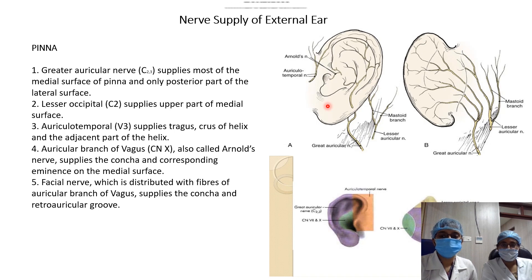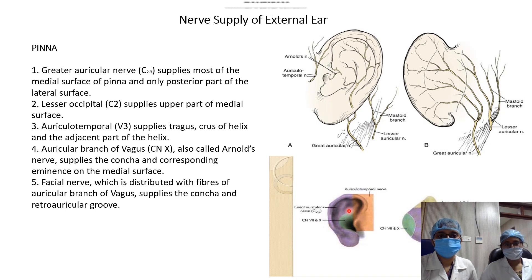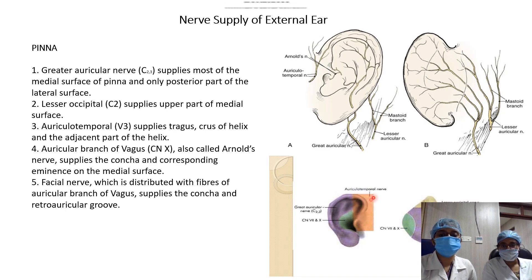Nerve supply of the external ear: the pinna is mainly supplied by the greater auricular nerve, derived from the second and third cervical nerves, covering the entire medial surface and outer part of the lateral surface. The lesser occipital nerve supplies only the posterior part of the lateral surface. The auriculotemporal nerve supplies the tragus, crux of the helix, and adjacent part of the helix. The auricular branch of the vagus nerve, along with some fibers of the facial nerve (also known as Arnold's nerve), supplies the concha and corresponding eminence on the medial surface.